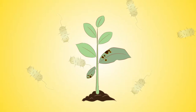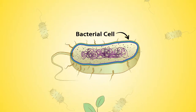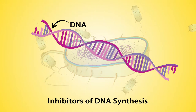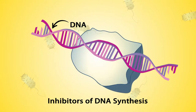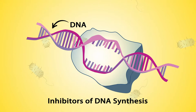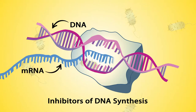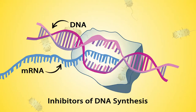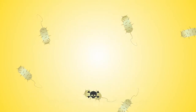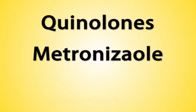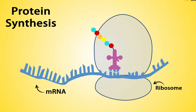DNA and RNA are keys to the replication of all living forms, including bacteria. Inhibitors of DNA synthesis don't allow DNA to synthesize. These antibiotics work by binding to components involved in the process of DNA or RNA synthesis, causing interference with normal cellular processes and ultimately compromising bacterial multiplication and survival. Examples include quinolones, metronidazole, and rifampin.